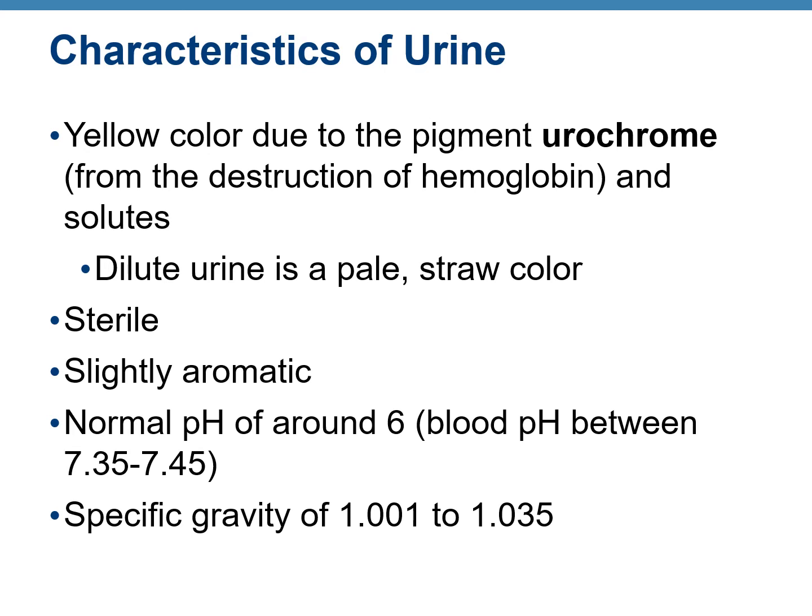Dilute urine is lighter in color; as urine gets more concentrated, it gets darker. Urine is sterile — there are no microorganisms in urine. It gives out a mild, slightly aromatic odor. The pH of urine is around 6, which is acidic, and the specific gravity — essentially the density — is 1.001 to 1.035.